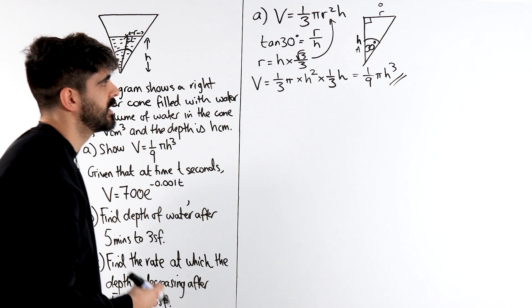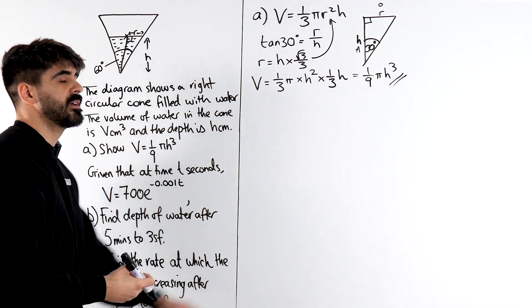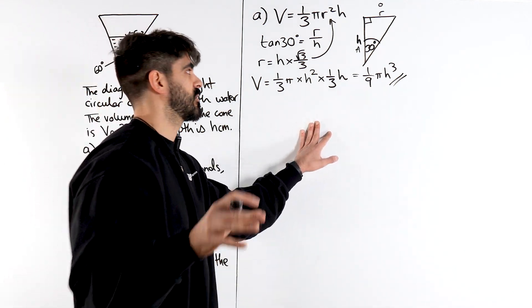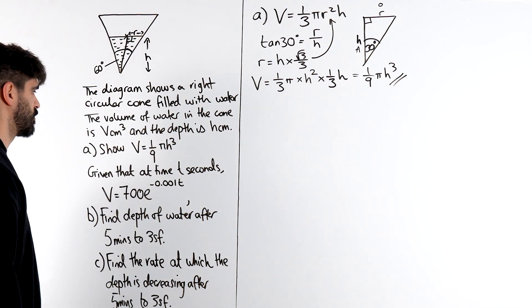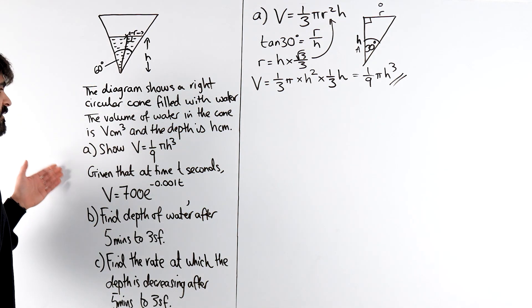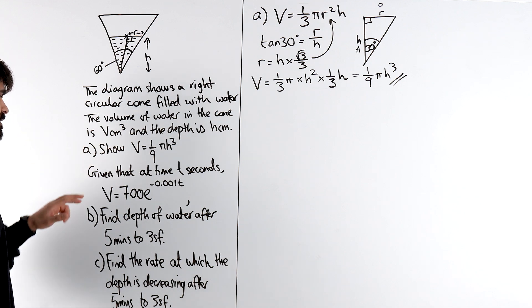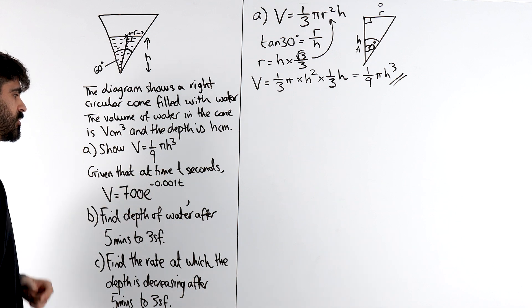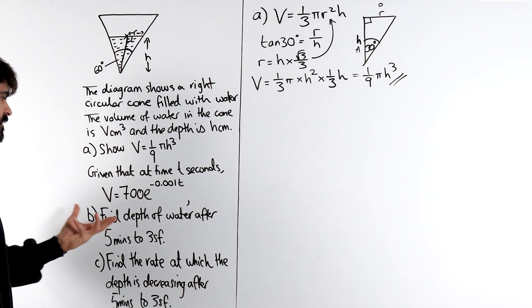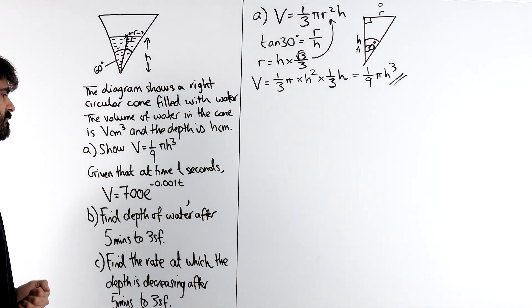Even part a of something like this is done very badly by students, but it's a very common question. So, guys, save this video as part of your related rates of change revision. So, given at the time t seconds, or given at time t seconds, the volume is equal to this. So, you have a relationship between the volume and the time in which water is being poured into the cone. Find the depth of water after 5 minutes.